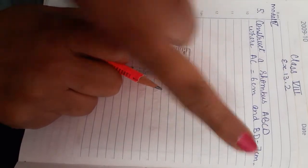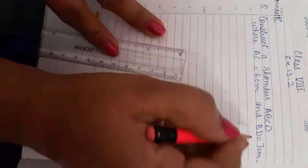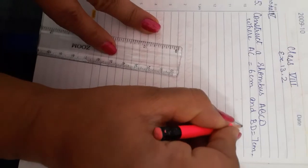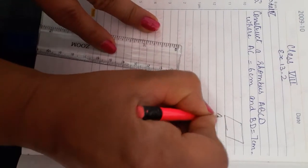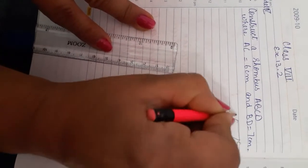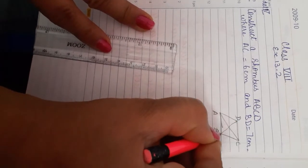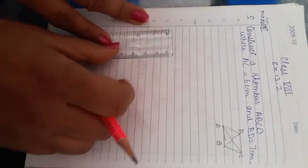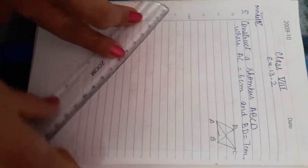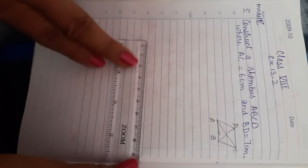AC is 6 centimeter, BD is 7 centimeter. That means two diagonals are given. If we draw a rough sketch of rhombus ABCD, we have AC as a diagonal and BD as a diagonal. So let's see how to construct it with the two diagonals.